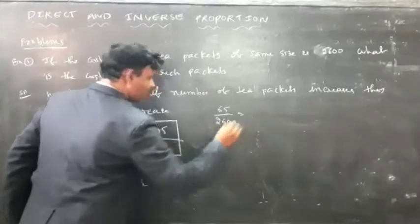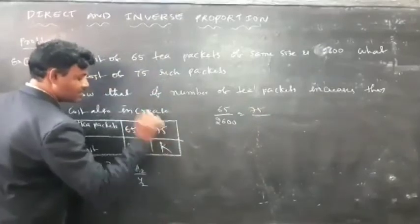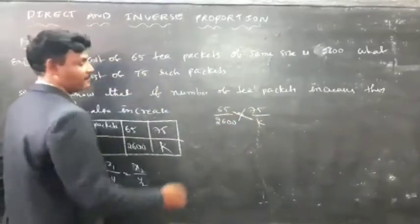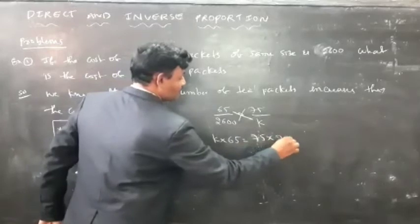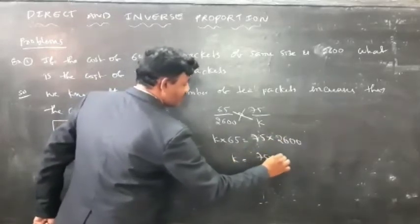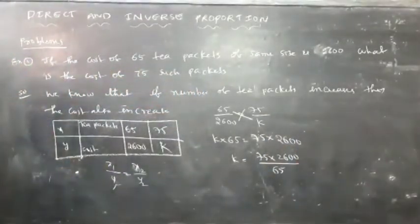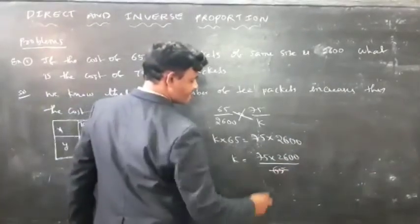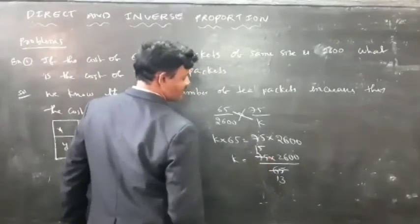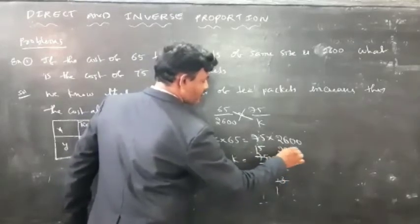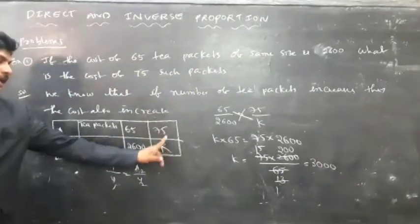Doing cross multiplication: 65 into k is equal to 75 into 2600. Then k is equal to 75 into 2600 divided by 65. After calculation, k equals 3000. The cost of 75 tea packets is 3000 rupees.